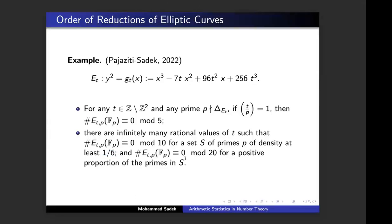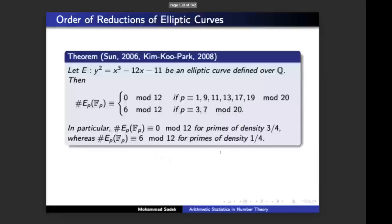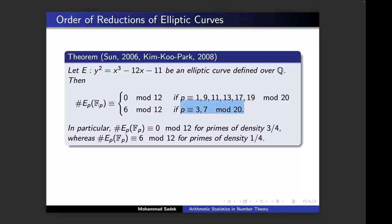That's an example of an elliptic curve for which we can compute the order of the reduction modulo 20, where 20 is not in Mazur's list. But we were aiming for more than this. That was our motivating example — a non-trivial example (meaning it has no complex multiplication). The order of the reduction modulo any prime depends on the congruence class of the prime: as long as p is congruent to certain residues modulo 20, the order of the reduction must be divisible by 12; and as long as p is congruent to 3 and 7 modulo 20, the order of the reduction must be congruent to 6 modulo 12.